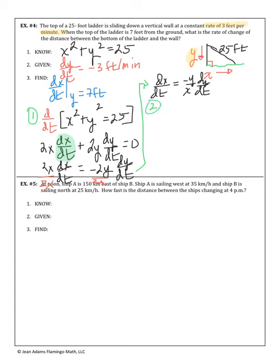Step two: I know y is 7 but I don't know x. When y equals 7, I can use the Pythagorean theorem: 7 squared plus x squared equals 25 squared. Solving, subtract 49 from 625 and take the square root — x equals 24 feet. Now I know x equals 24, y equals 7, and dy/dt is negative 3 feet per minute.